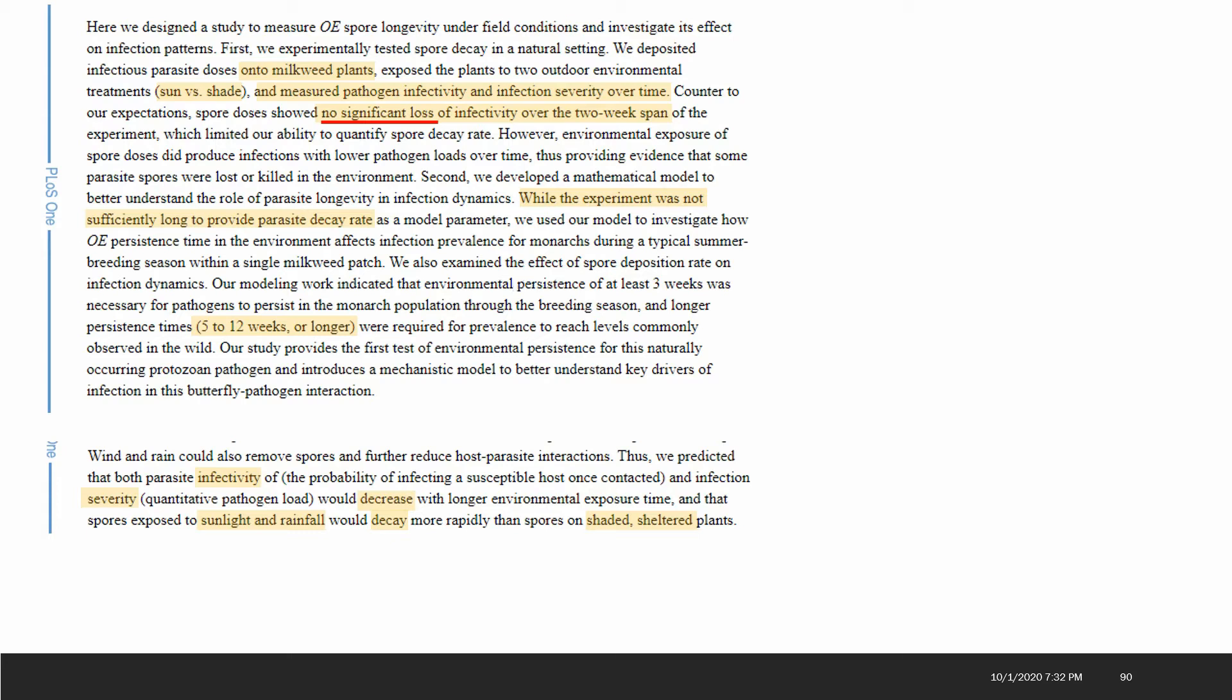This model could have been done without this experiment really. They examined the effect of the spore deposition rate on infection dynamics. Our modeling work indicated that the environmental persistence of at least three weeks was necessary to persist in the population through the breeding season and longer to reach the required prevalence commonly observed in the wild, at least twelve weeks or longer. As you know from personal experience from folks that are raising monarchs, we know that this spore can really last a long time. So you really have to disinfect your equipment from year to year to make sure you don't have a problem.